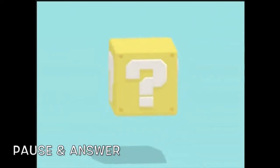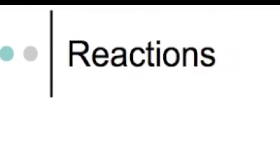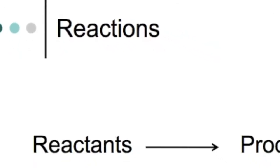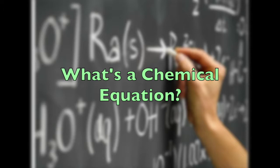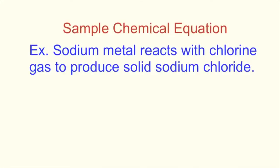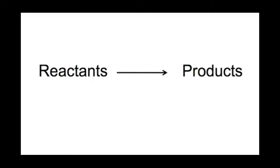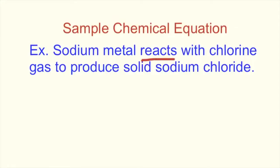How could you represent this reaction besides just describing it in words? Scientists use a standard method to represent chemical reactions called chemical equations. A chemical equation is a shorthand way to sum up what happens in a chemical reaction. The general form is: reactants yields products. The reactants are the substances that begin the reaction, and the products are the substances produced in the reaction.